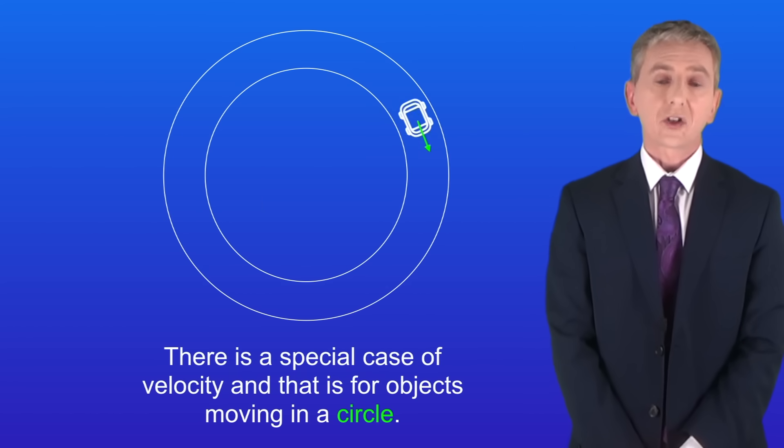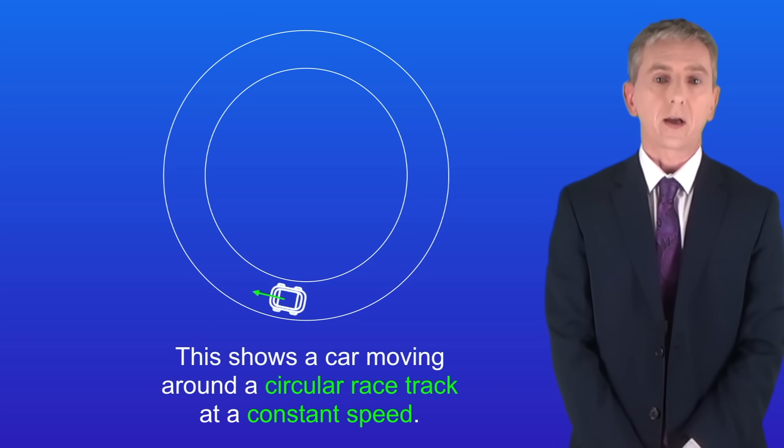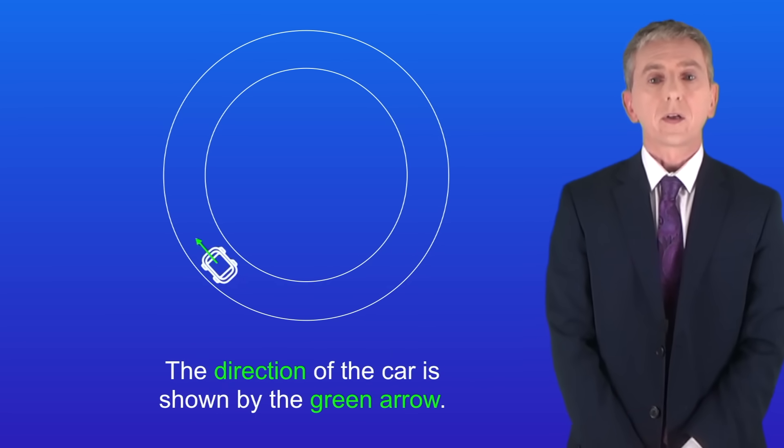Now there is a special case of velocity and that is for objects moving in a circle. I'm showing you here a car moving around a circular race track at a constant speed. The direction of the car is shown by the green arrow.